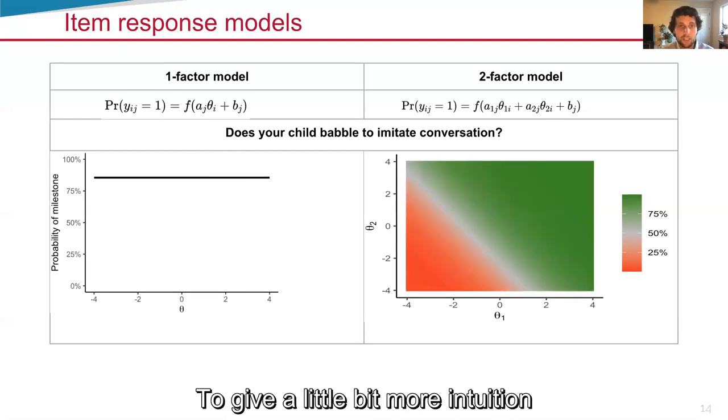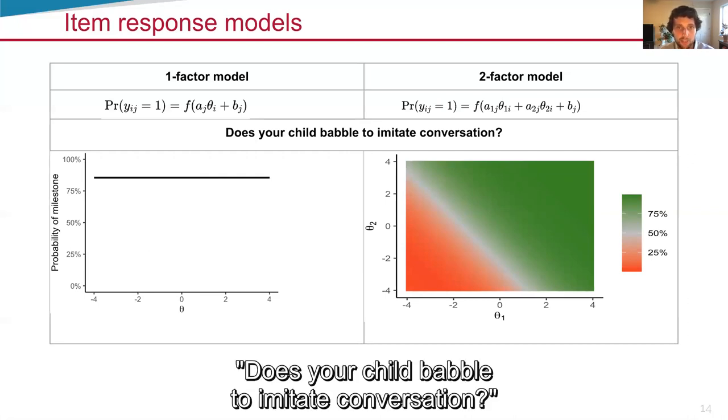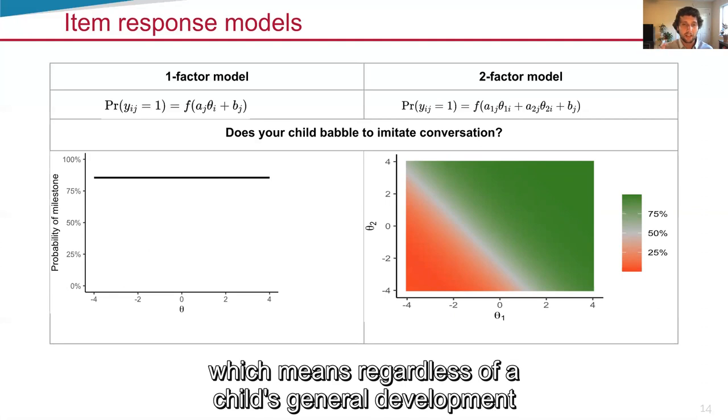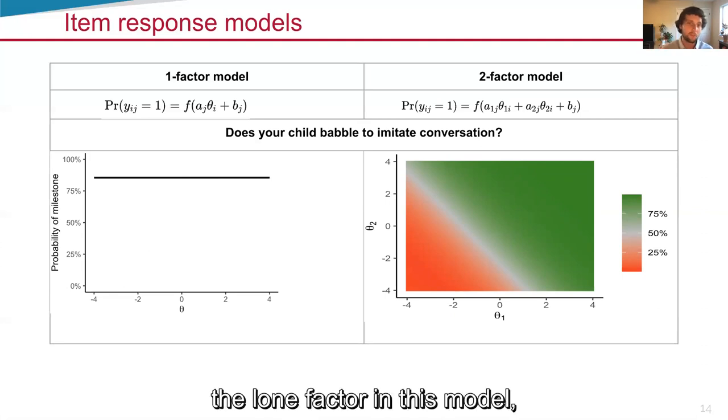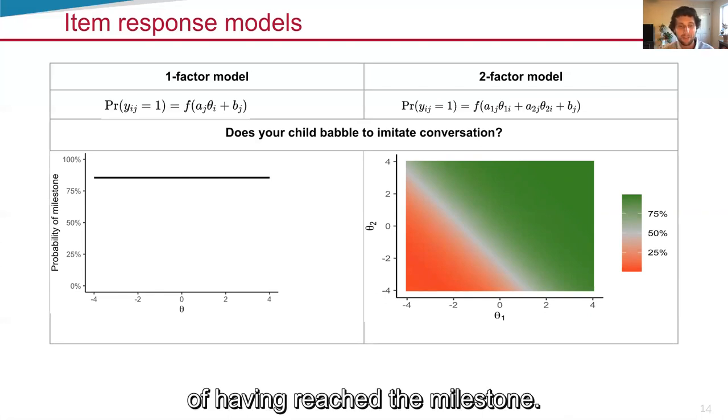To give a little bit more intuition, let's look at the same graphs for a second milestone. Does your child babble to imitate conversation? Interestingly, on the one-factor, we see this flat line, which means regardless of a child's general development, the lone factor in this model, they always have the same probability of having reached the milestone.